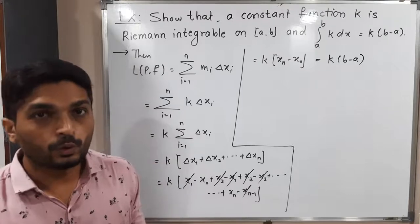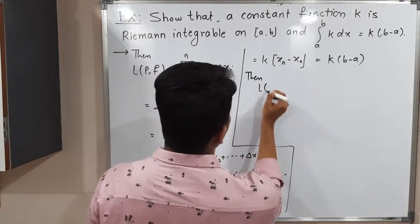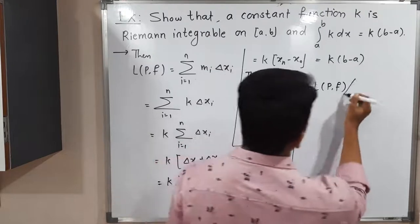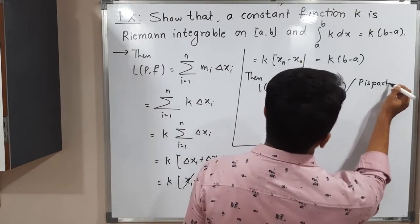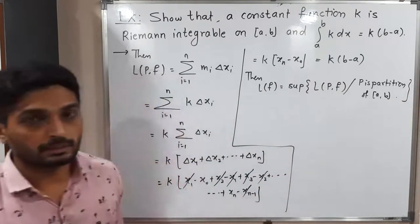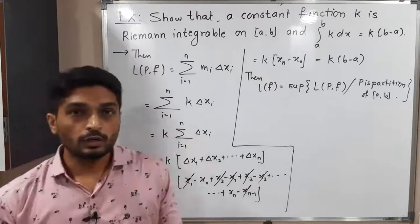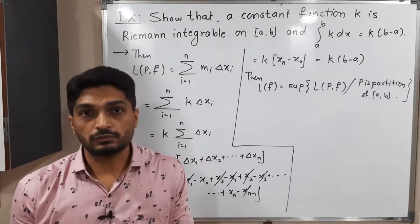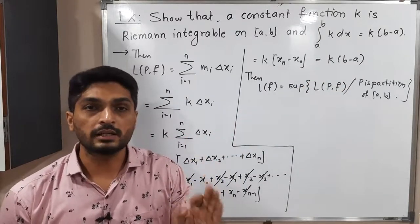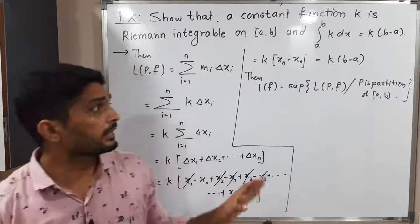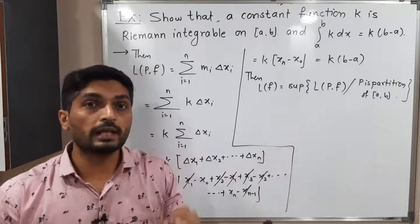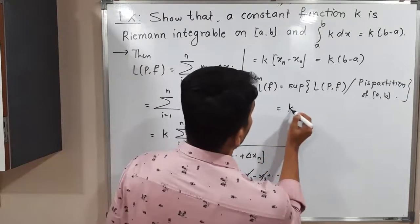Now it is easy to find the lower integral L(f), defined as the supremum of L(P, f) over all partitions P of [a, b]. Since we took an arbitrary partition and always obtained the value k(b − a), this value holds for any partition. Since k(b − a) is a constant, its supremum is the same constant. Therefore the lower integral also equals k(b − a).